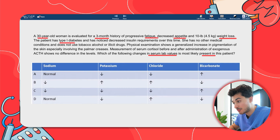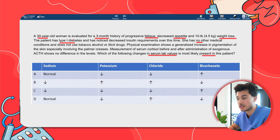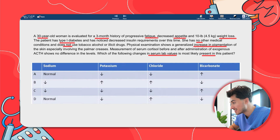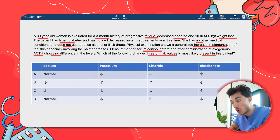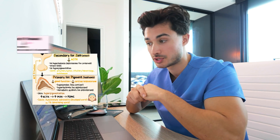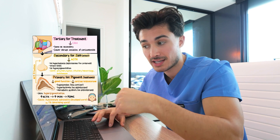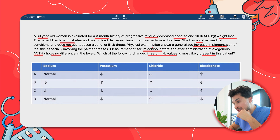The patient has type 1 diabetes and has noticed decreased insulin requirements over this time — suggesting a possible autoimmune etiology. She has no other medical conditions and does not use tobacco, alcohol, or illicit drugs. Physical exam shows a generalized increase in pigmentation of the skin, especially involving the palmar creases. Serum cortisol measured before and after administration of exogenous ACTH shows no difference in levels — pointing toward primary, secondary, or tertiary adrenal insufficiency. The ACTH stimulation test helps determine the level of the problem: no cortisol response to exogenous ACTH means the adrenal itself cannot produce cortisol — primary adrenal insufficiency.